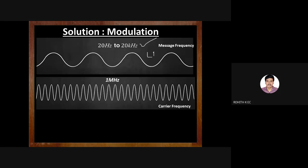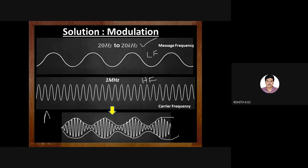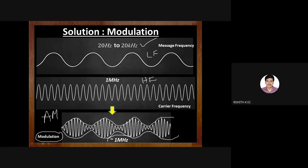Under modulation, we take a low-frequency message signal and a high-frequency carrier signal, and superimpose the message signal on top of the carrier. The message signal becomes an envelope — this type of modulation scheme is amplitude modulation. This AM signal has a frequency of approximately 1 MHz, while the message signal was around 15 kHz.